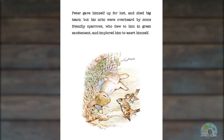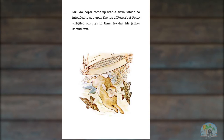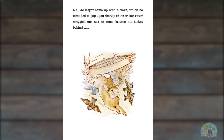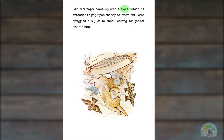Mr. McGregor came up with a sieve, which he intended to pop up on the top of Peter. But Peter wriggled out just in time, leaving his jacket behind him. What do you think the word sieve means? I've never heard of this word before. But it says Mr. McGregor came up with a sieve. And in the picture, I can see that Mr. McGregor is holding some type of container. So maybe a sieve is a type of container.